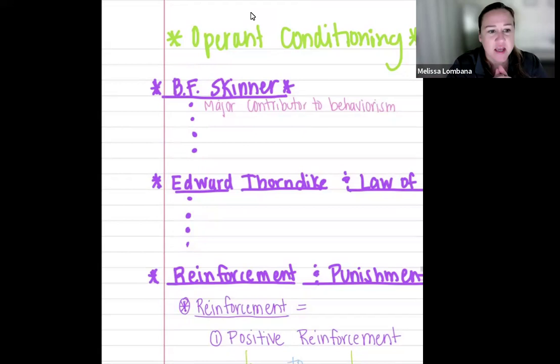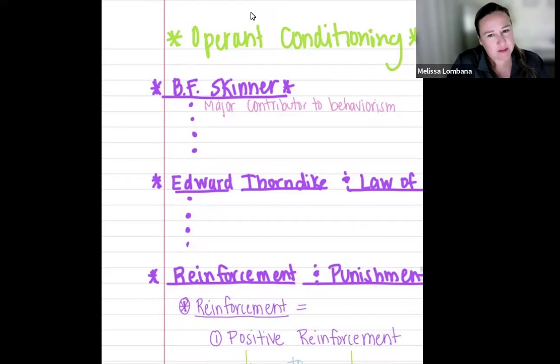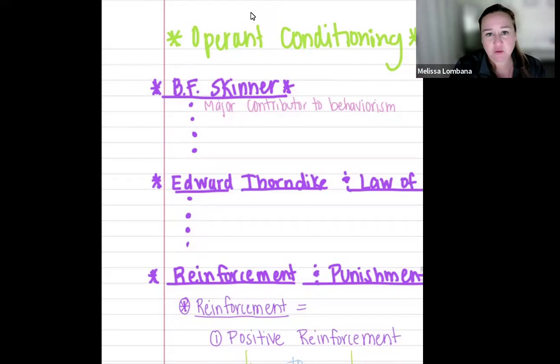Behaviors that give a pleasant consequence — or pleasant response — you are more likely to repeat. And then the next bullet: behaviors that give unpleasant responses are less likely to be repeated. Again, who determines what's pleasant and unpleasant is all up to the individual.